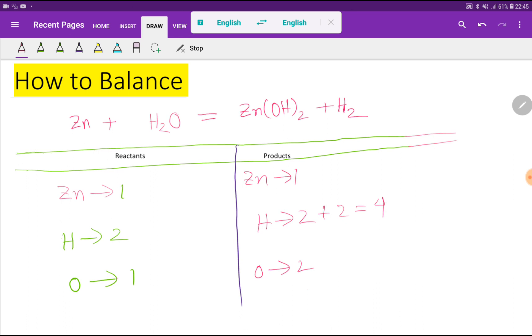To balance this reaction means we have to balance the number of zinc, hydrogen, and oxygen from both sides. Zinc is one to one, so zinc is already balanced. Hydrogen is two to four, so hydrogen is not balanced.